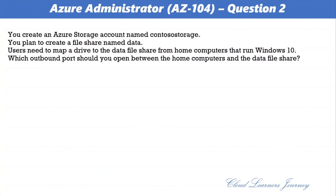Question number two. You create an Azure storage account named Contoso Storage and plan to create a file share named data. Users need to map a drive to the data file share from home computers running Windows 10. Which outbound port should you open? Options: a) 80, b) 443, c) 445, d) 3389. The correct option is c) 445. The reason is that Server Message Block (SMB) is used to connect to an Azure file share over the internet and requires TCP port 445. Port 80 is for HTTP, 443 for HTTPS, and 3389 for Remote Desktop Protocol.